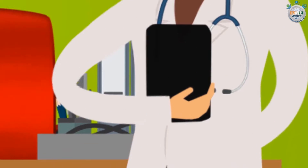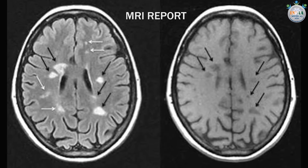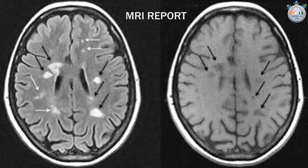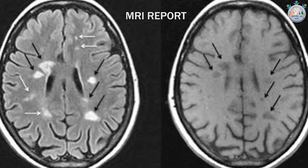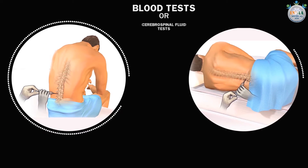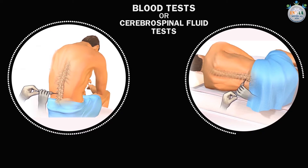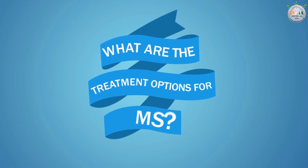for evidence of many spots or patches of scar tissue in different patterns of the CNS, through MRIs, spinal taps or lumbar punctures to check the fluid in the spinal cord, blood tests, or cerebrospinal fluid tests.